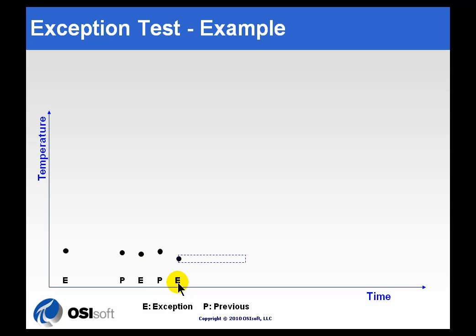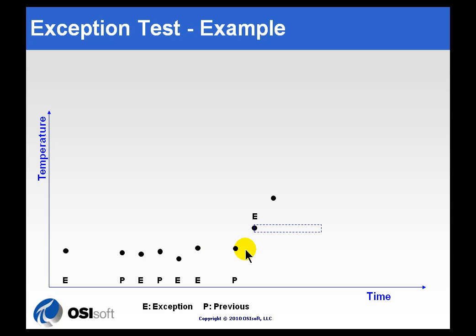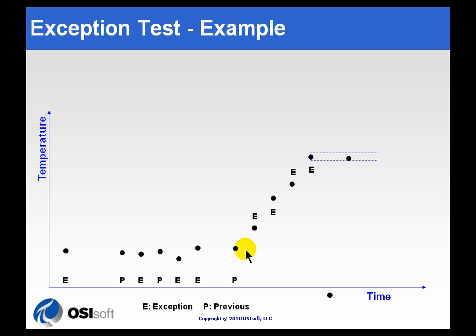We continue drawing a new rectangle. This value is very obviously outside the exception deviation, so that is an exception. The system is smart enough not to bring in that value twice — it's already been brought in once as its own exception. We continue moving forward, eliminating those values that don't go outside the dead band. Here we have an exception, and now we get one exception after another, so all these values are going to make it into the system. Another value past the exception deviation, and we bring in that plus the previous value.